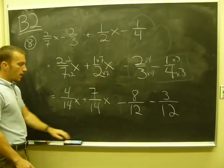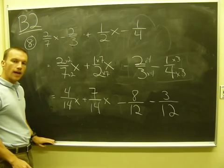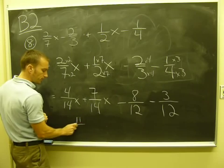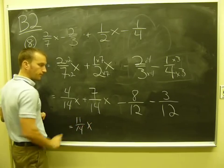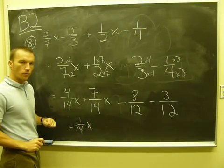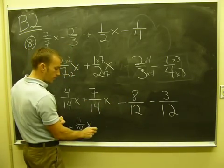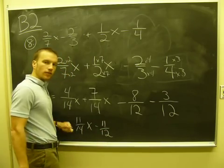So my final step, I can now add my numerators together. So down here, four and seven is eleven. And I keep my denominator of fourteen, common denominator of fourteen. Over here, negative eight minus three is negative eleven.